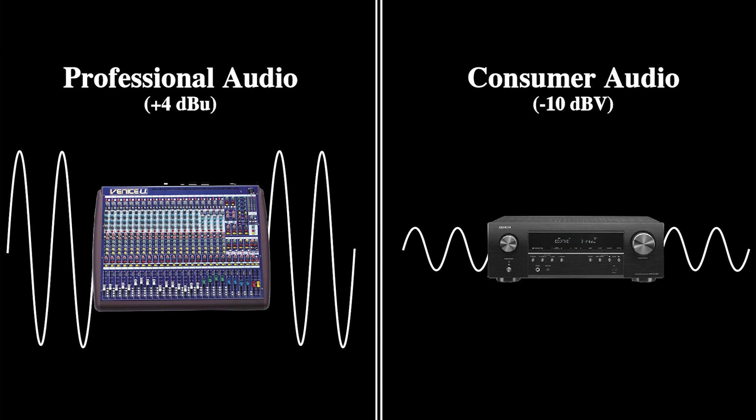So what does all of this mean on a practical level? Said simply, professional equipment is designed to send and receive signals that are about 12 dBV greater than the signals used in consumer audio. This is important when you're going to connect consumer and professional equipment together as part of a single system.